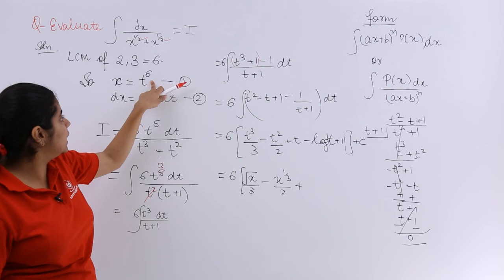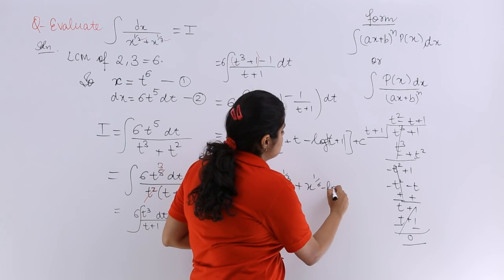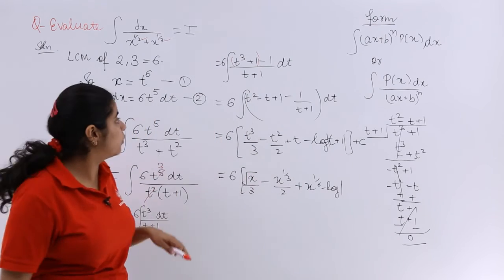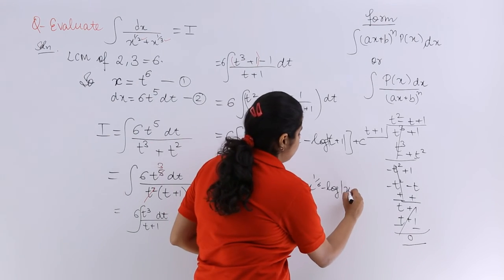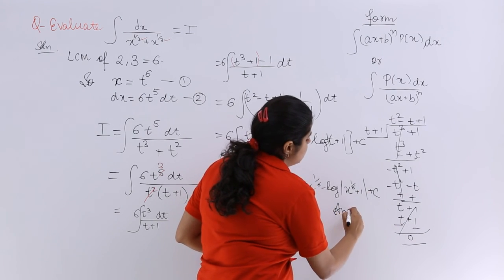Plus t. What is t? x raised to the power 1 by 6. Minus log t plus 1. What is t again? x raised to the power 1 by 6 plus 1. Plus C which is the constant of integration.